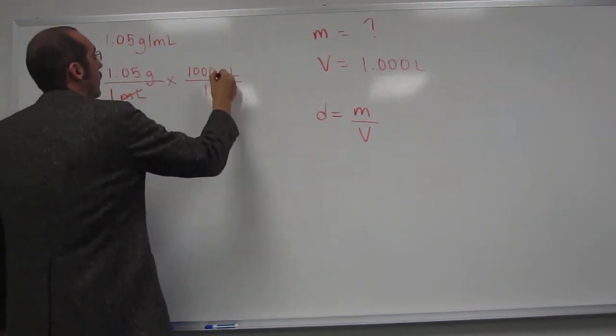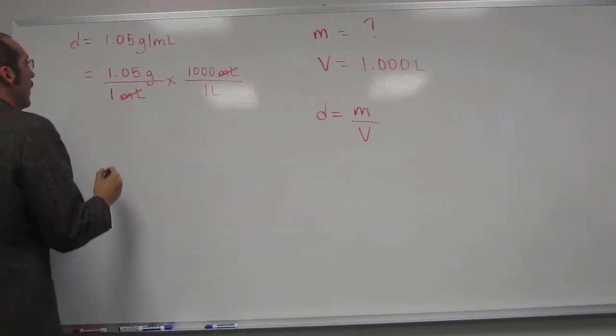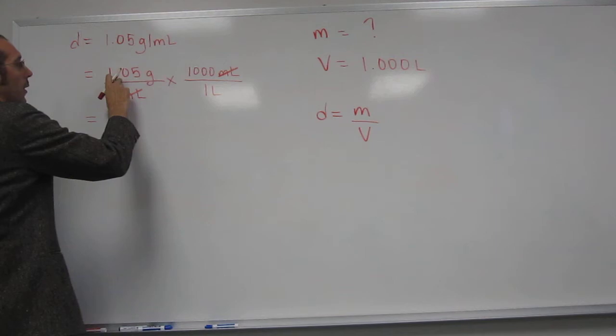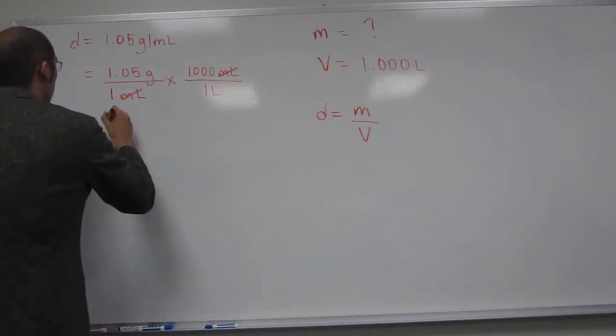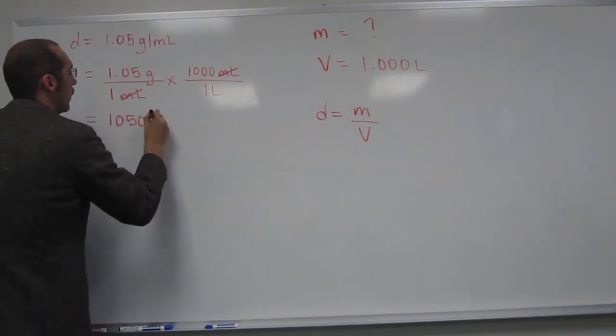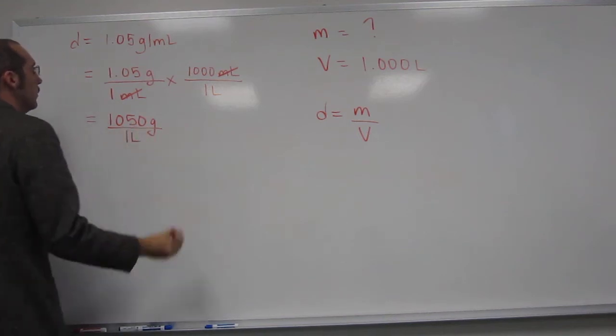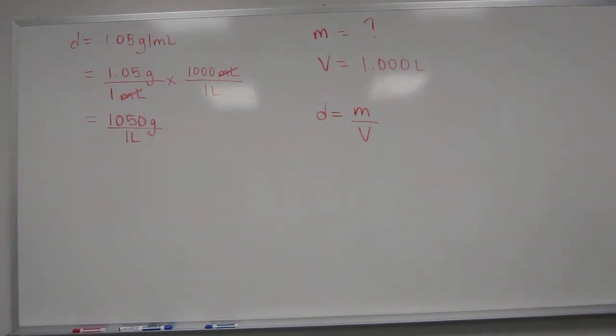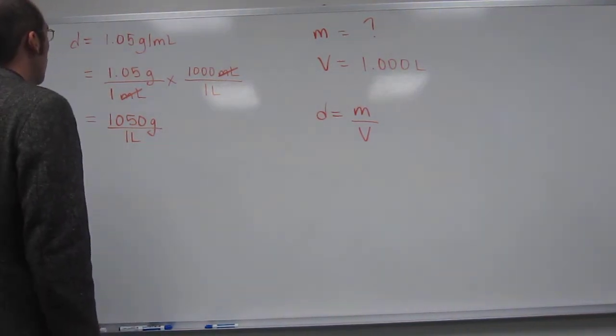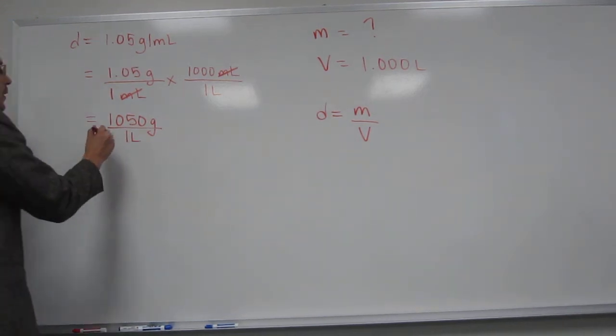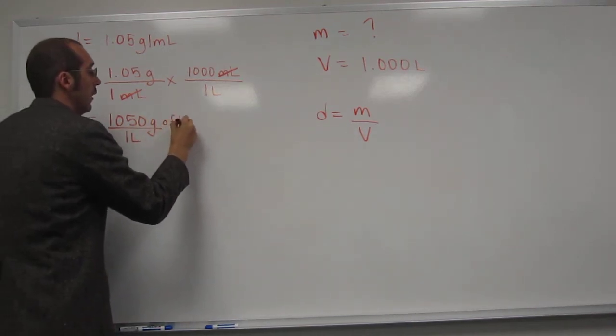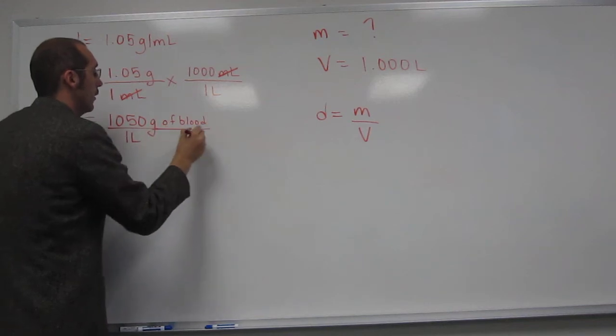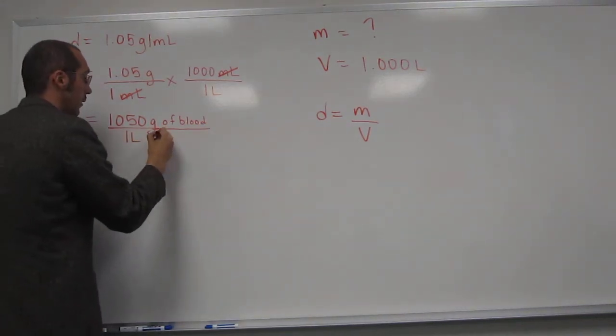So divide, or cancel, cancel. And then what do we do now? We say 1.05 grams times 1,000, which is going to be 1050 grams per liter. So remember what did we say? This is 1,050 grams of what? Blood. Blood. Per what? Liter of what? 1 liter of blood. Of blood.